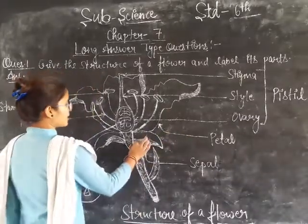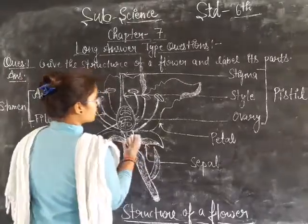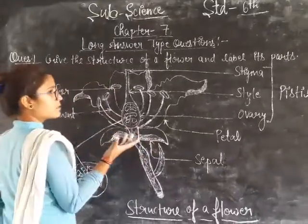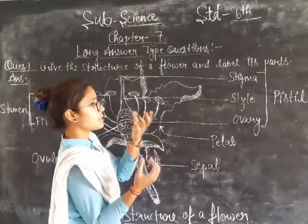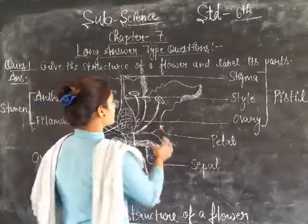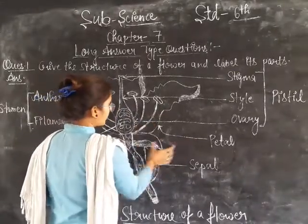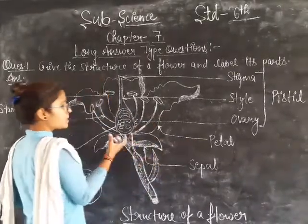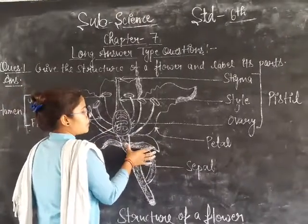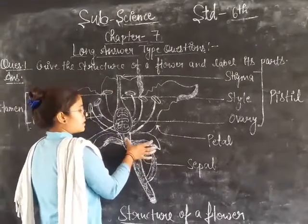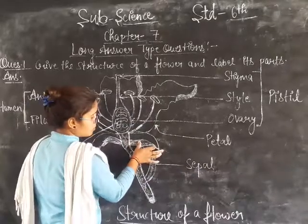This green leaf-like structure is the petal. It is a red leaf and this little part bends. The lower leaf layer is the sepal, which is a green leaf-like structure that protects the flower.